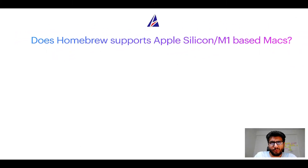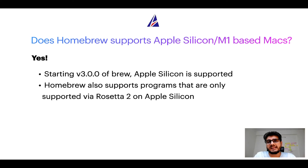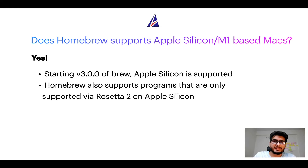Next question: can you use Homebrew to install programs on Apple Silicon, or more popularly known as M1 MacBooks? Again, yes. Starting version 3.0 of brew, Apple Silicon is now supported on Homebrew. In fact, Homebrew also supports programs that are at the moment only supported via Rosetta 2 on Apple Silicon. Now that I have answered your questions on safety and compatibility of Homebrew, let's get to the installation process.